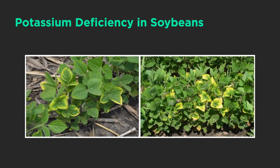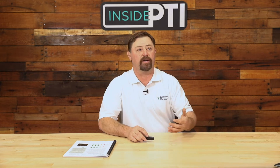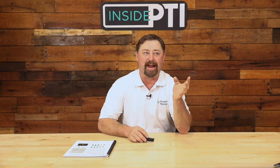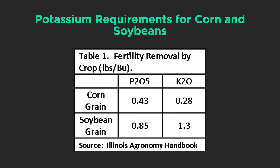What we need to determine is if this happens in the field, why is it happening? What kind of fertilizer did we put on in regards to potassium, what kind of yields are we pulling off, and where are we deficient? According to the Illinois Agronomy Handbook, corn uses 0.28 pounds of potassium per bushel, and soybeans use 1.3 pounds per bushel. So soybeans are definitely a higher user when it comes to potassium.